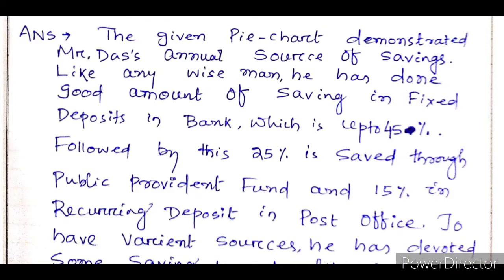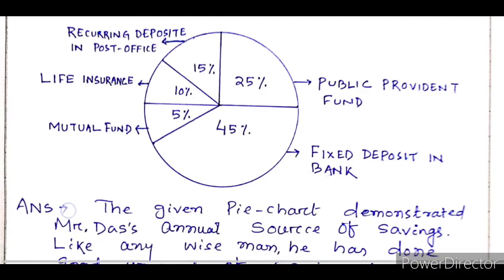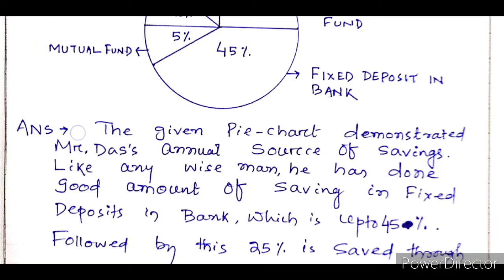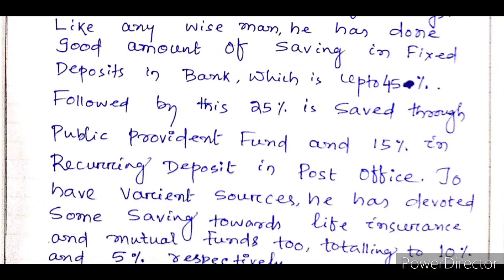So like a wise person, he is saving for the future — 45 percent in bank fixed deposit, 25 percent in Provident Fund, and 15 percent in Recurring Deposit. When interpreting this data, write about each item in descending order — since 45 percent is the highest figure in the diagram, start with 45, then go to 25, then 15, then 10, then 5. Write the amounts and percentages in descending order. He saves 15 percent in Post Office Recurring Deposit.